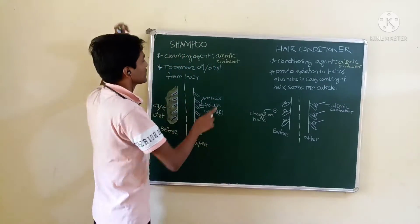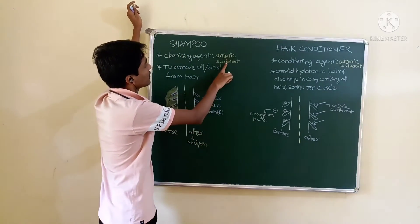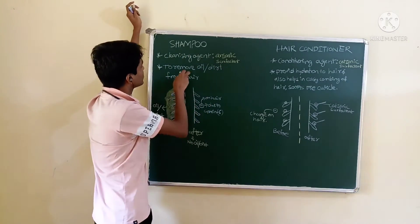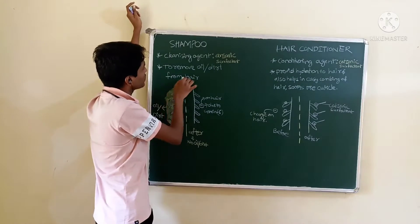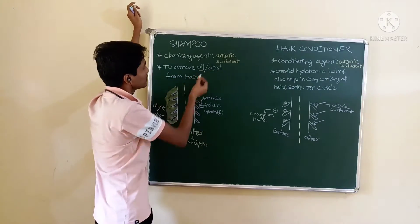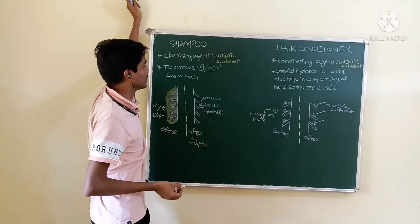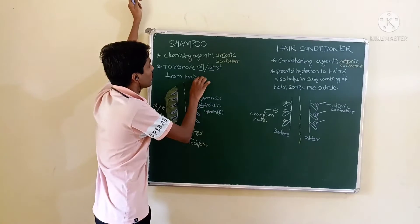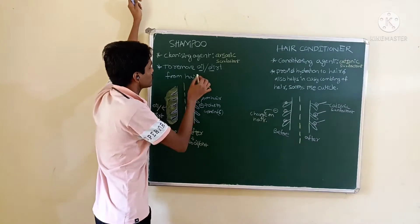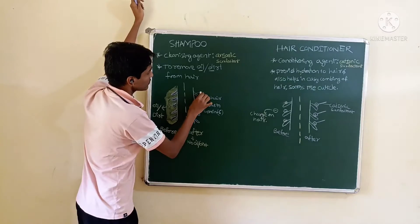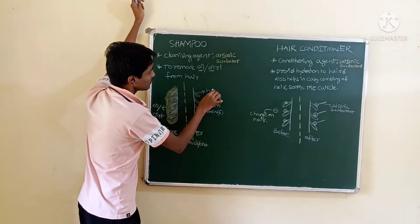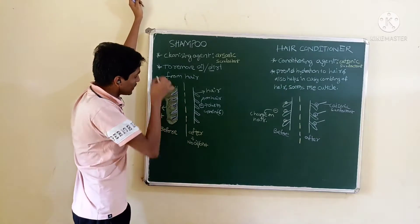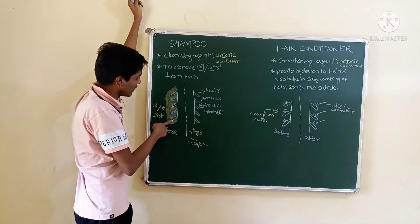Anionic surfactant we can use as a cleansing agent. This cleansing agent will remove oil and dirt particles — remove from hair, not just from the scalp. This will remove oil and dirt particles from the hair.